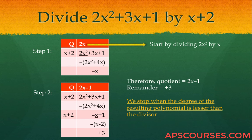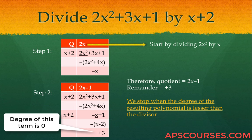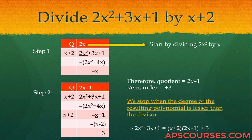We stop when the degree of the resulting polynomial is less than the degree of the divisor. The degree of x plus 2 is 1 and the degree of plus 3 is 0, so 3 is the remainder. Therefore: 2x squared plus 3x plus 1 equals x plus 2 times 2x minus 1 plus 3.